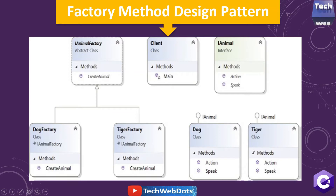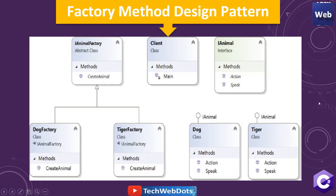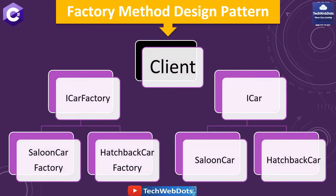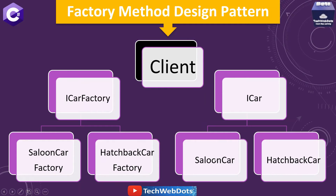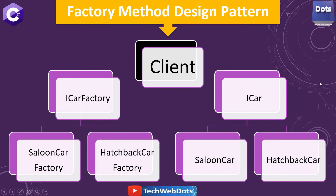On the other side, the animal hierarchy remains the same — we have Animal, Dog, Tiger, common actions, and the client. To relate this with another real-world example: in manufacturing, you can say Car, where a client has a CarFactory responsible for creating SaloonCar and HatchbackCar as concrete factories. On the other side, we have ICar implemented by SaloonCar and HatchbackCar, with common features like start engine and check gasoline.